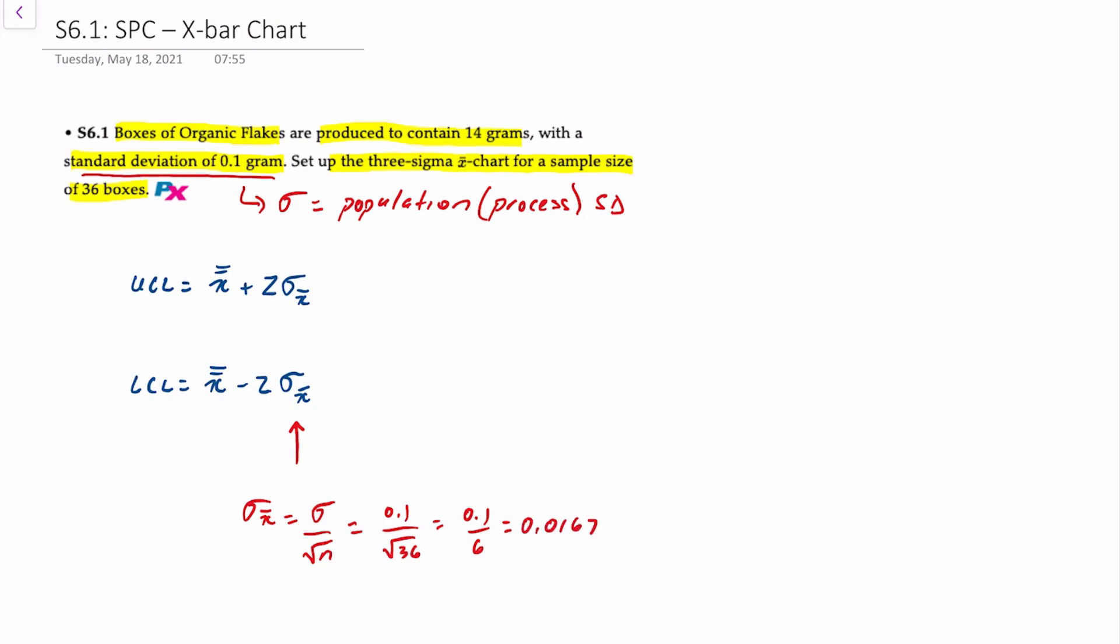You probably want to keep your work in your calculator to four decimal places when we're dealing with statistical process control. So now we can finish calculating the upper and lower control limits.